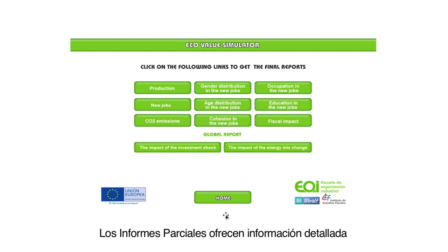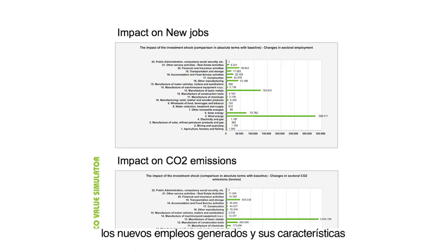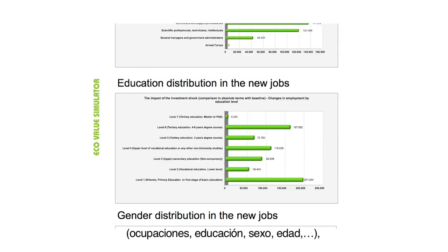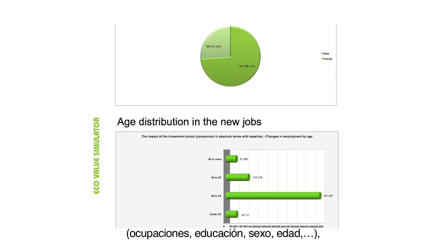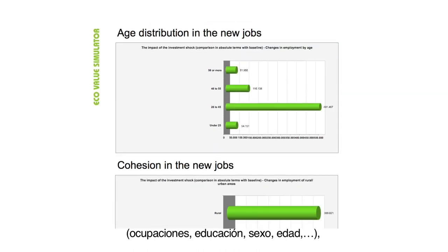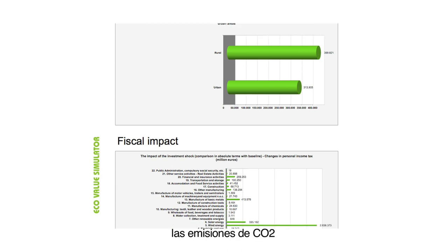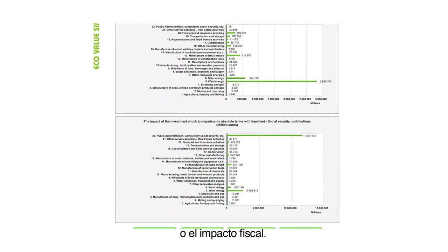Partial reports offer detailed information about a selection of relevant specific topics, such as impact on production, new jobs created and their characteristics — occupation, education, gender, age distribution — territorial cohesion, carbon dioxide emissions, and fiscal impact.